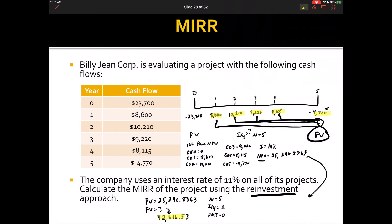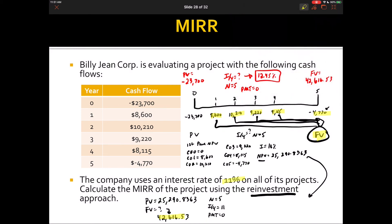Now we have the initial cash outflow of $23,700 as present value and the future value of $42,616.53. Solve for IY with N = 5, no payment, and we get a modified internal rate of return of 12.45%. This exceeds the 11% cost of capital, so we accept the project. The modified IRR rectifies both the unconventional cash flow problem and the reinvestment rate assumption by using the company's actual 11% reinvestment rate rather than the IRR itself.